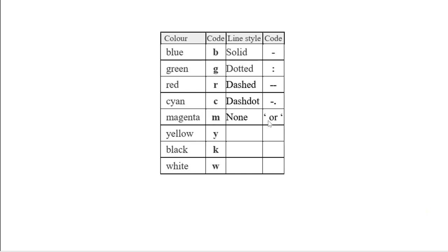Before going further, let me explain the color codes and line styles associated with the plot function. The default color code is blue — the code for blue is 'b', 'g' for green, 'r' for red, etc. Similarly, the default styling is a solid line represented by a single dash. If you want a dotted line, the colon is used. If you want a dashed line, you use two dashes, and for dash-dot, there is a specific code. We will look at examples involving various combinations of these.